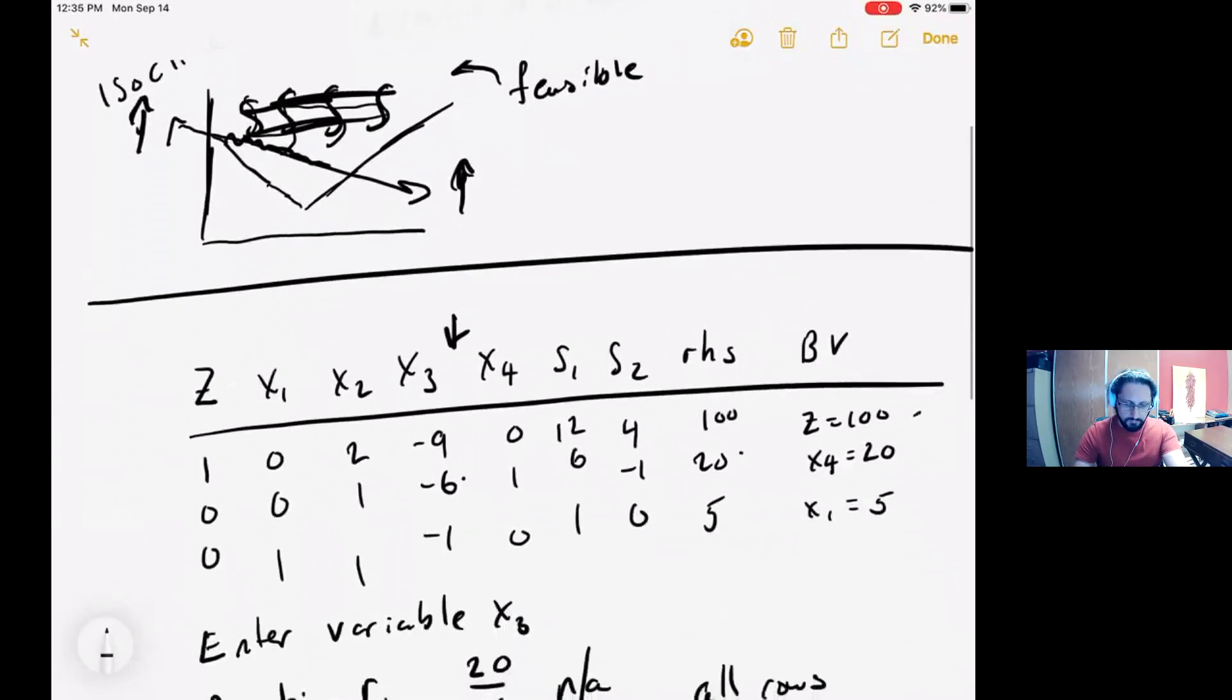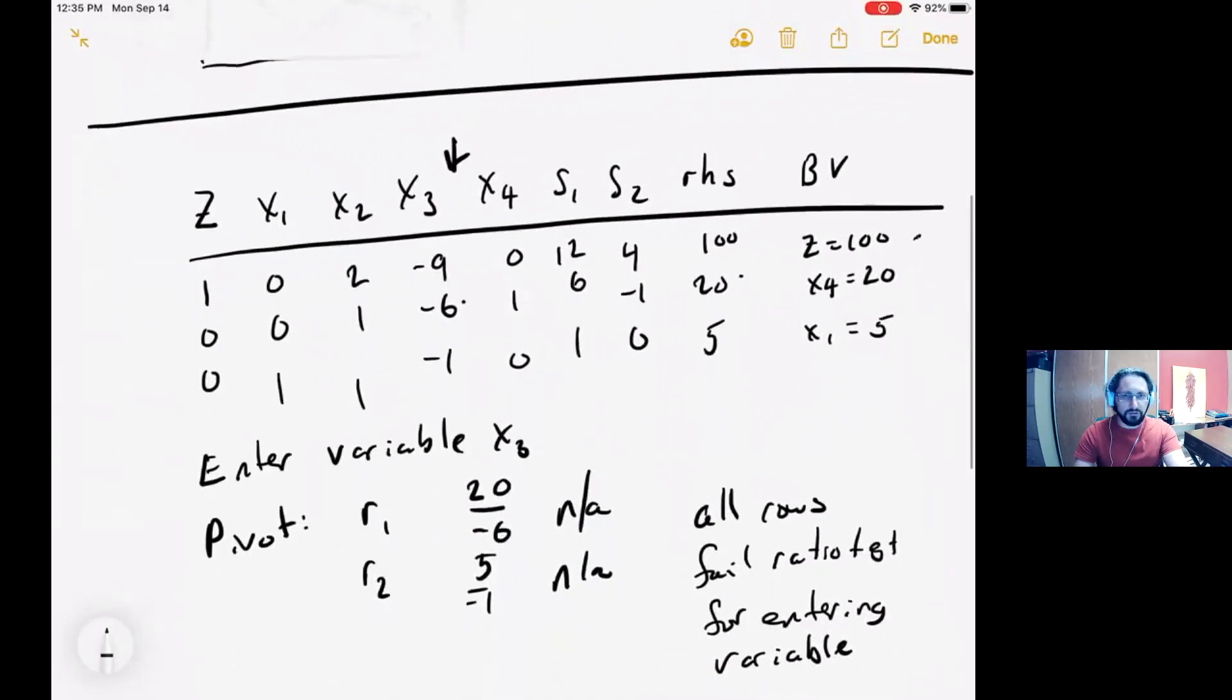Now I want to show you what you can do to recognize the unbounded LP from the simplex tableau. Here's tableau number 21 in Section 4.8. Let's pretend that we were trying to solve this maximization problem. So we would choose the most negative coefficient in row zero. That corresponds to variable x3.